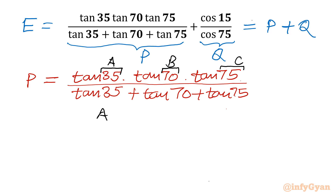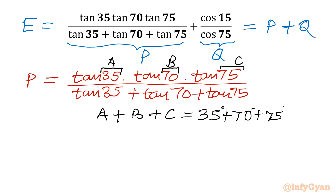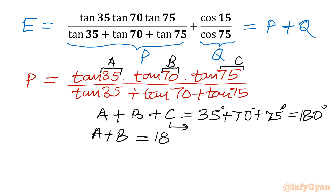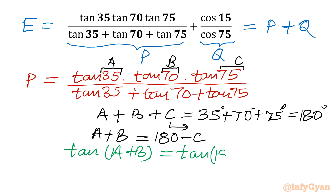We can see that A plus B plus C equals 35 degrees plus 70 degrees plus 75 degrees, which equals 180 degrees. Taking C to the other side gives A plus B equals 180 degrees minus C. Now let's take tan of both sides: tan(A plus B) equals tan(180 minus C).